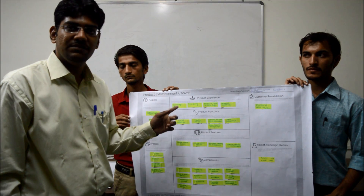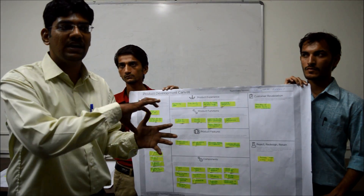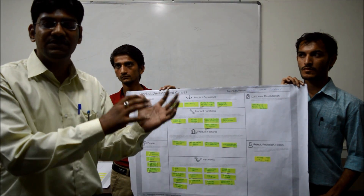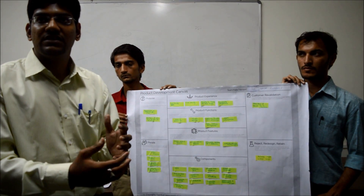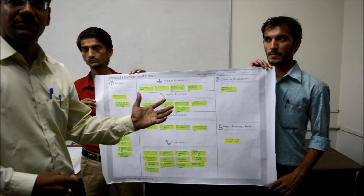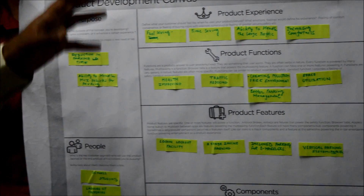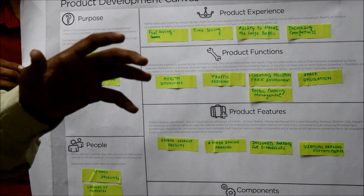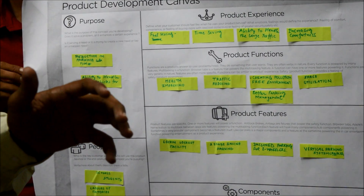This is the third sheet: the product development canvas. In this sheet, we narrow down and identify the problem and product which is directly related to our problem, as already defined in the first and second canvas. First is purpose — our main purpose is reducing time and better traffic management.